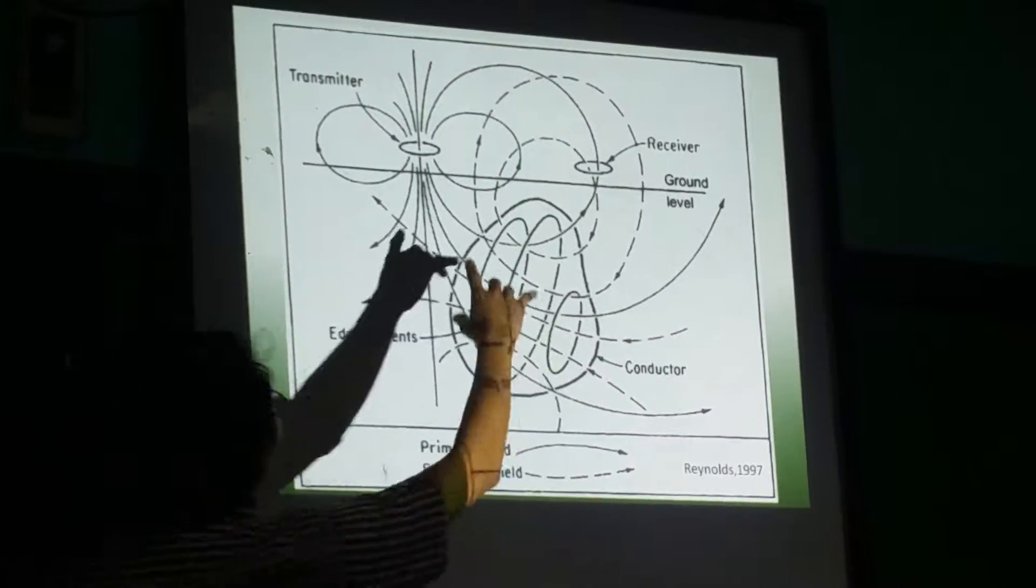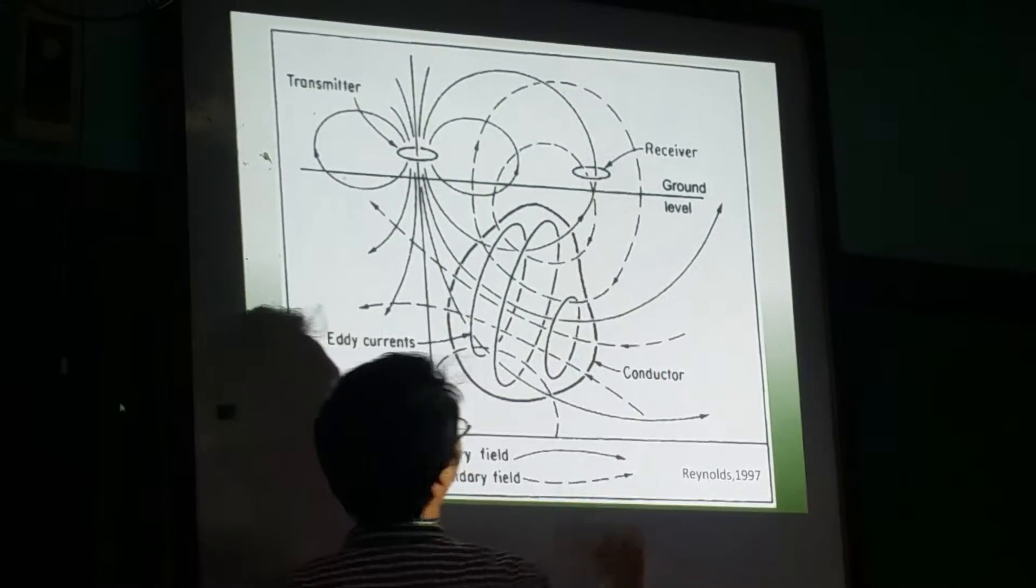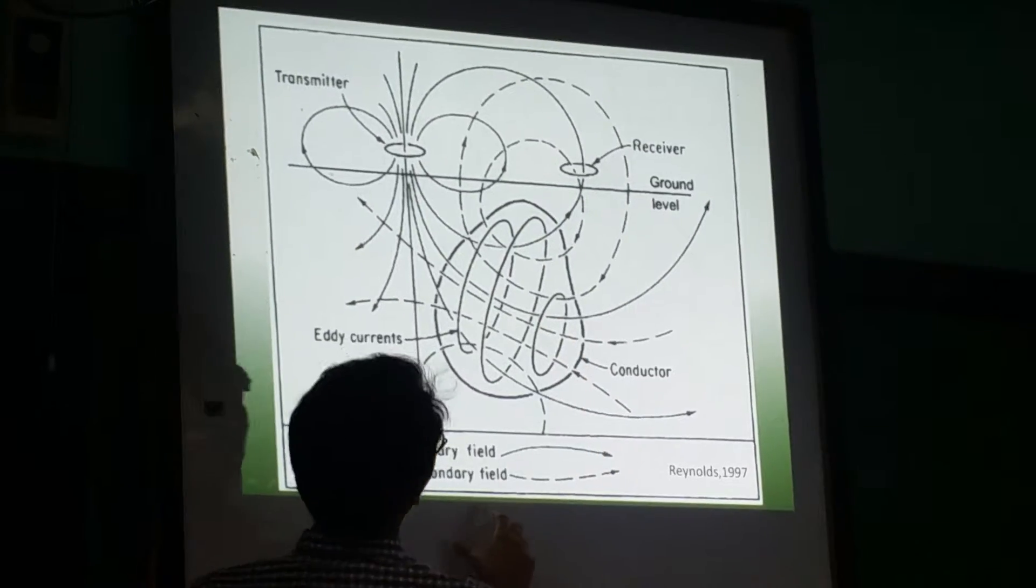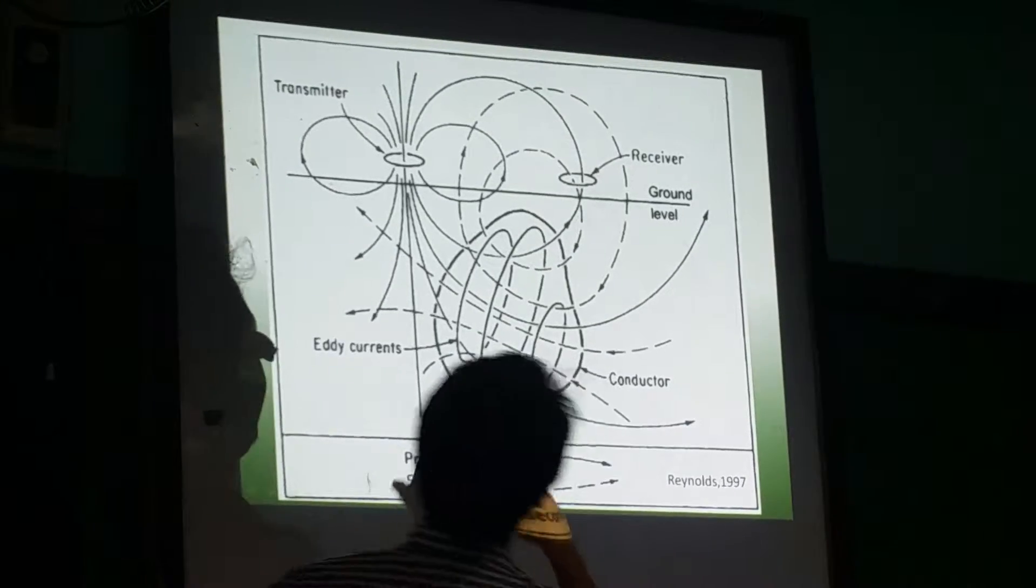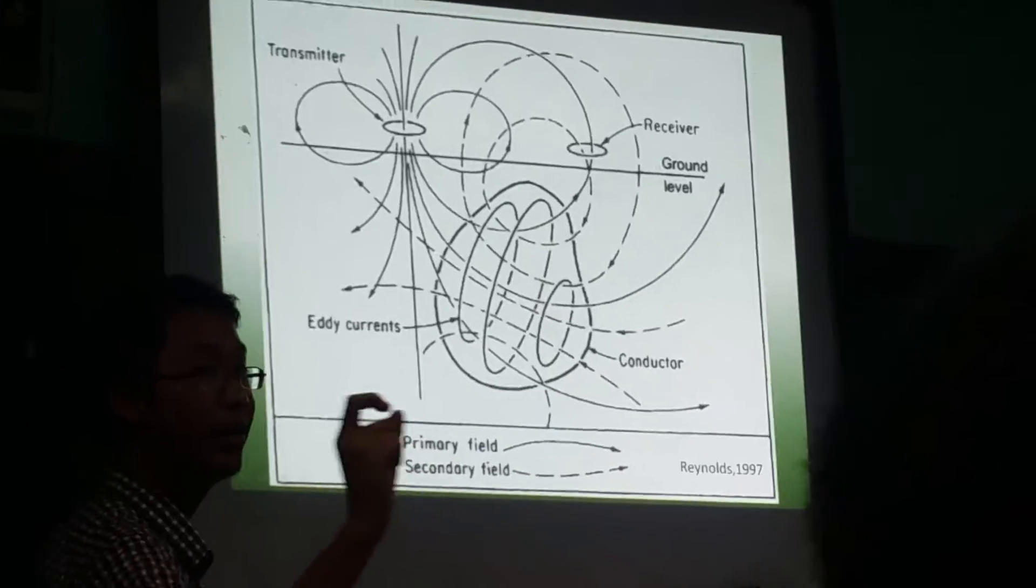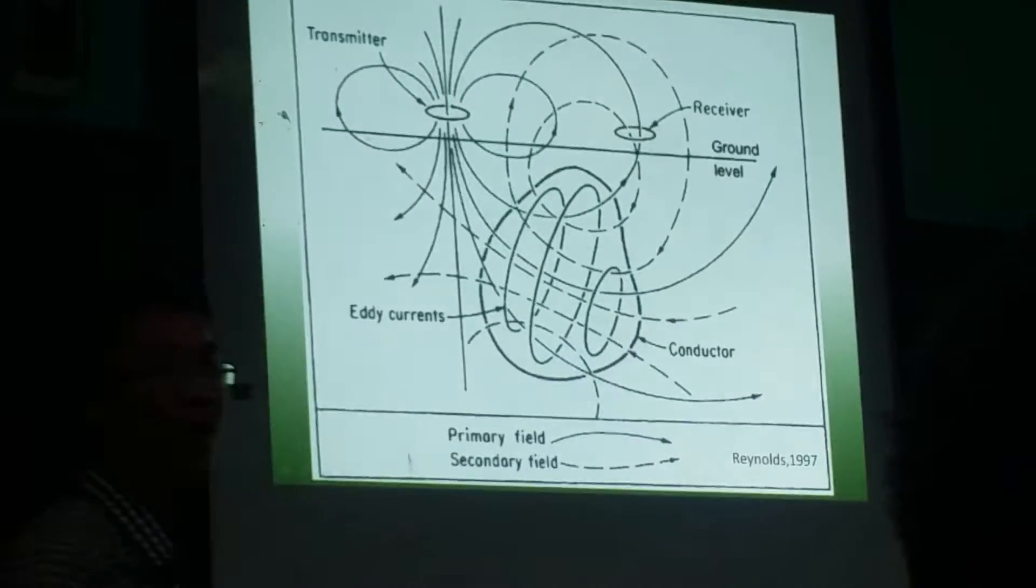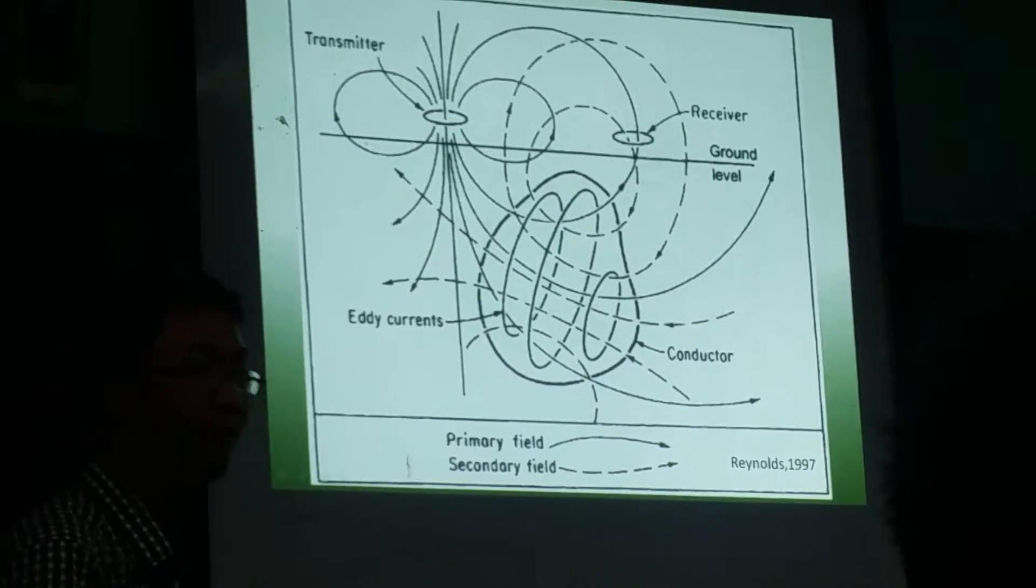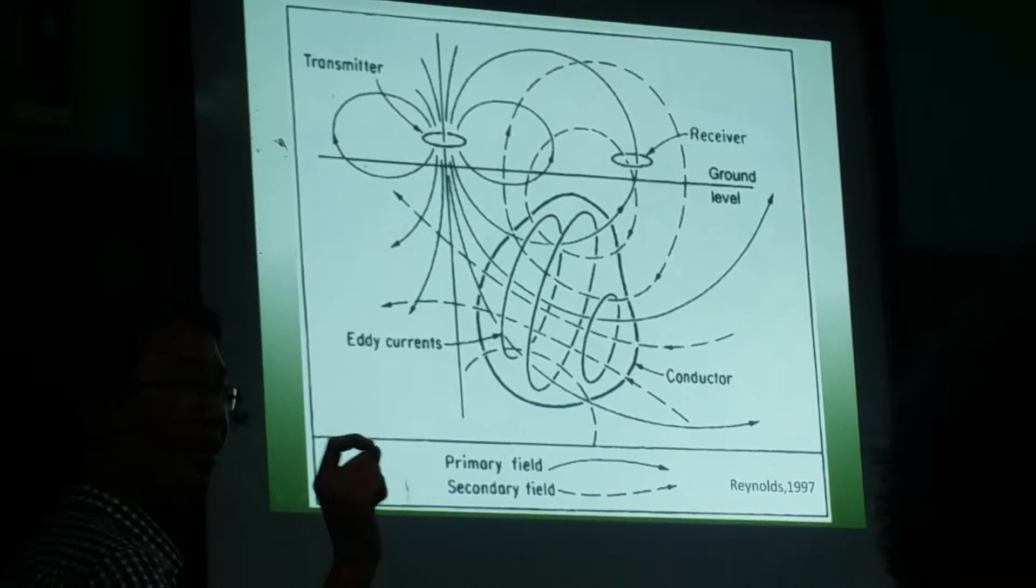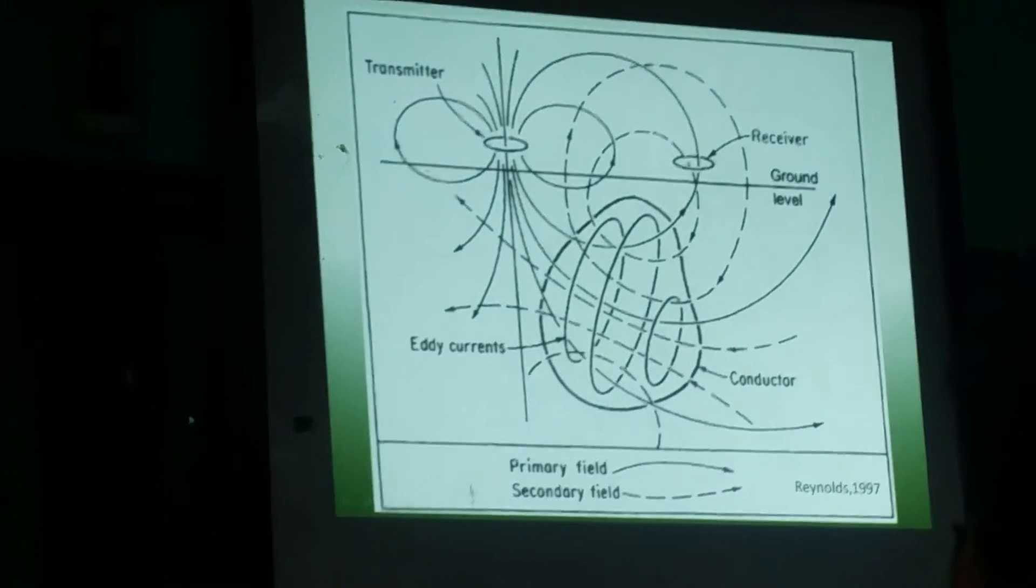When there is an interaction between your primary field and your secondary field, with reference to the plane, with reference to the orbit, there is a voltage that will be recorded at that. And that voltage, remember, is how we get the data from the conductor.